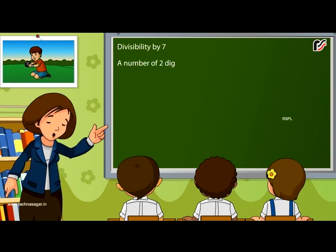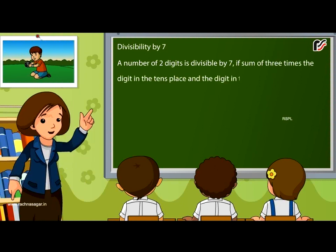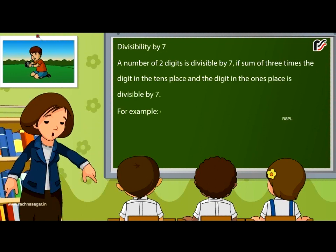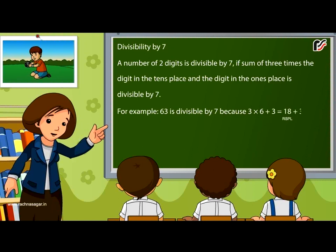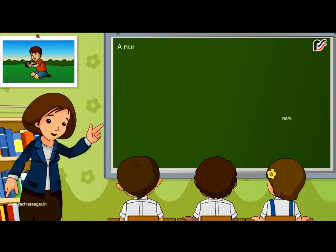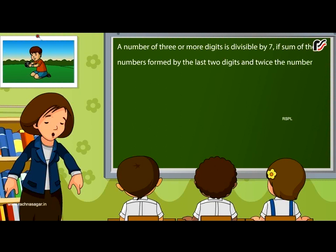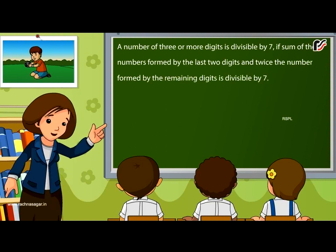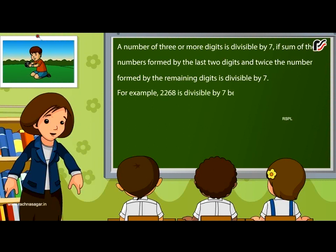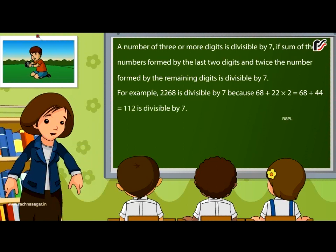Divisibility by 7: A two-digit number is divisible by 7 if the sum of three times the digit in the 10's place and the digit in the 1's place is divisible by 7. For example, 63 is divisible by 7 because 3 × 6 + 3 = 18 + 3 = 21, and 21 is divisible by 7. A number of three or more digits is divisible by 7 if the sum of the number formed by the last two digits and twice the number formed by the remaining digits is divisible by 7. For example, 2268 is divisible by 7 because 68 + 22 × 2 = 68 + 44 = 112, which is divisible by 7.